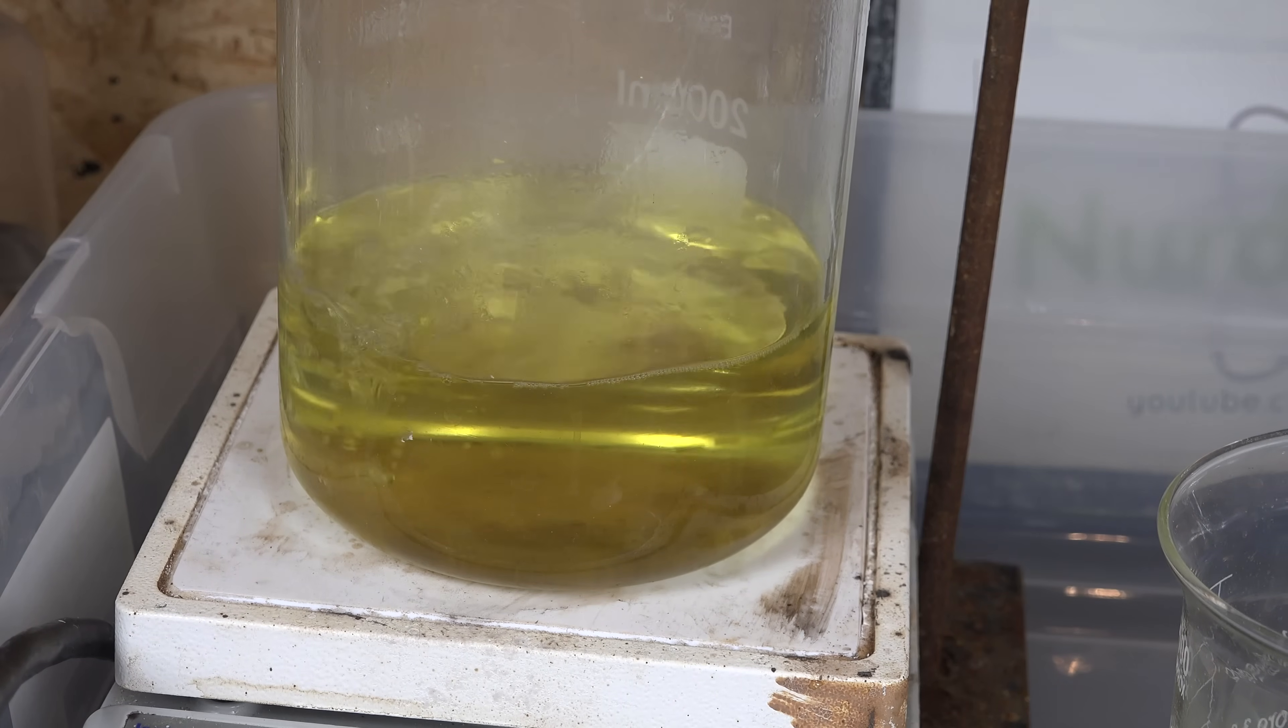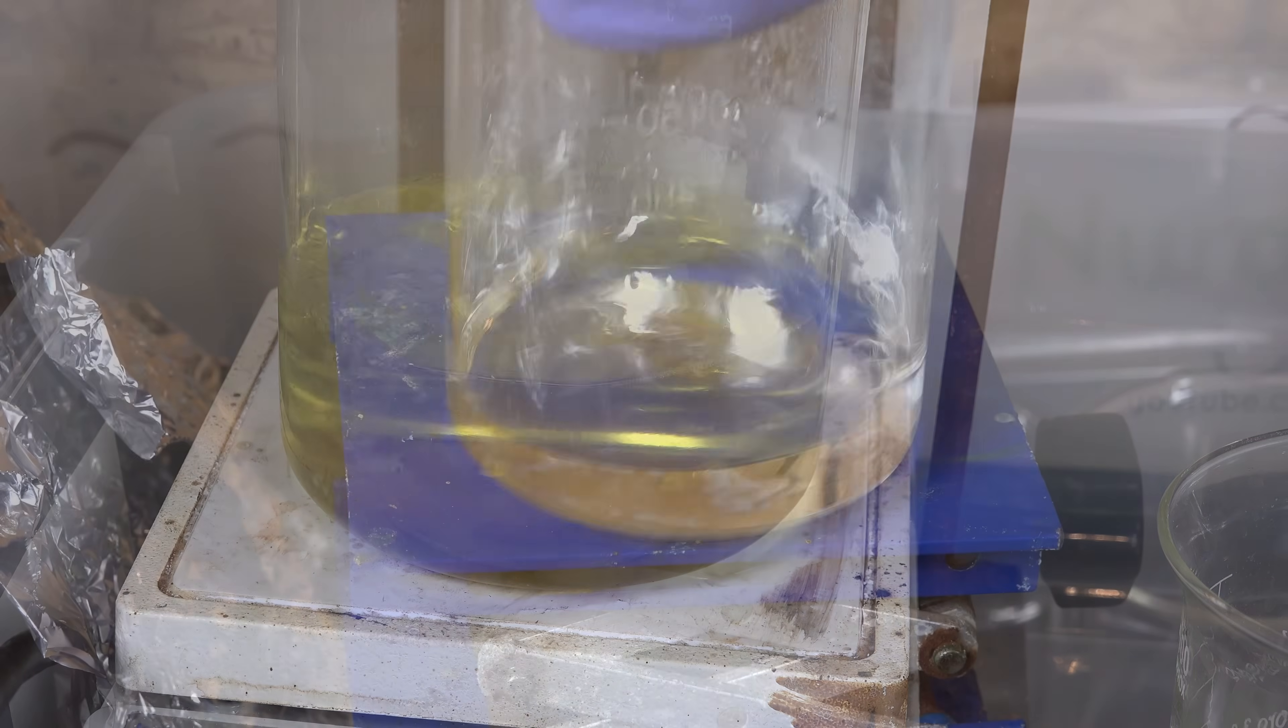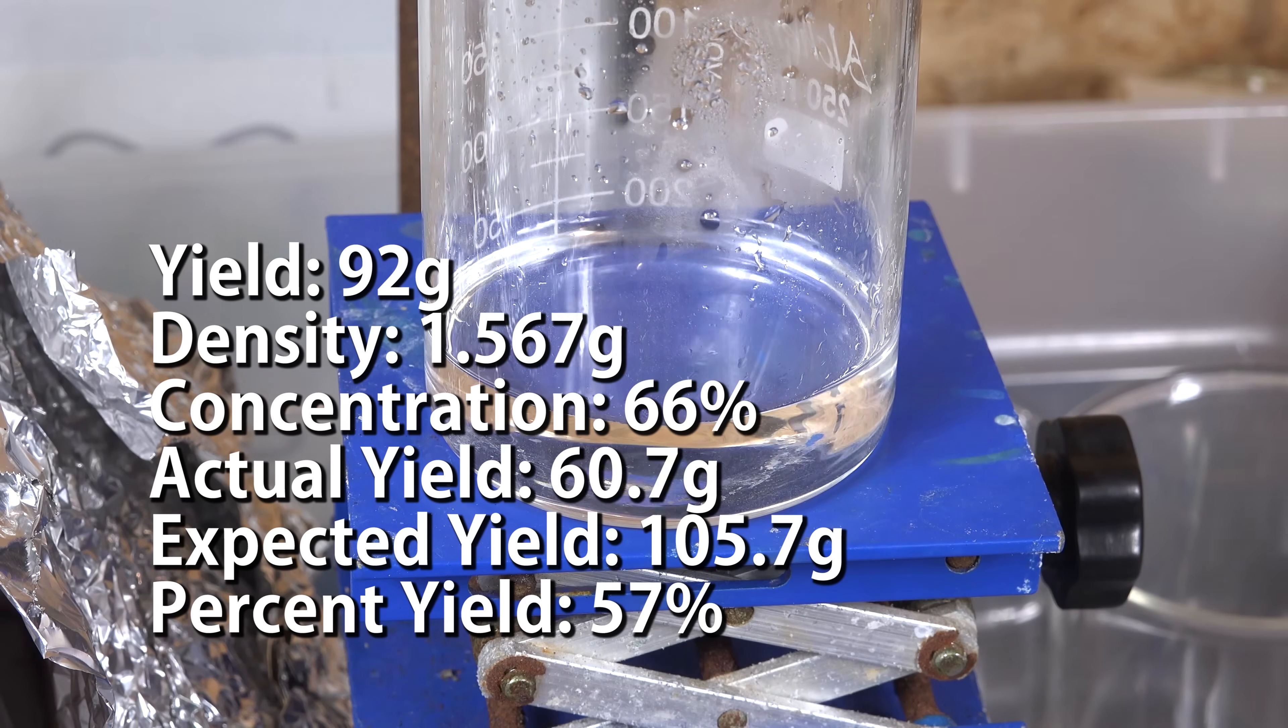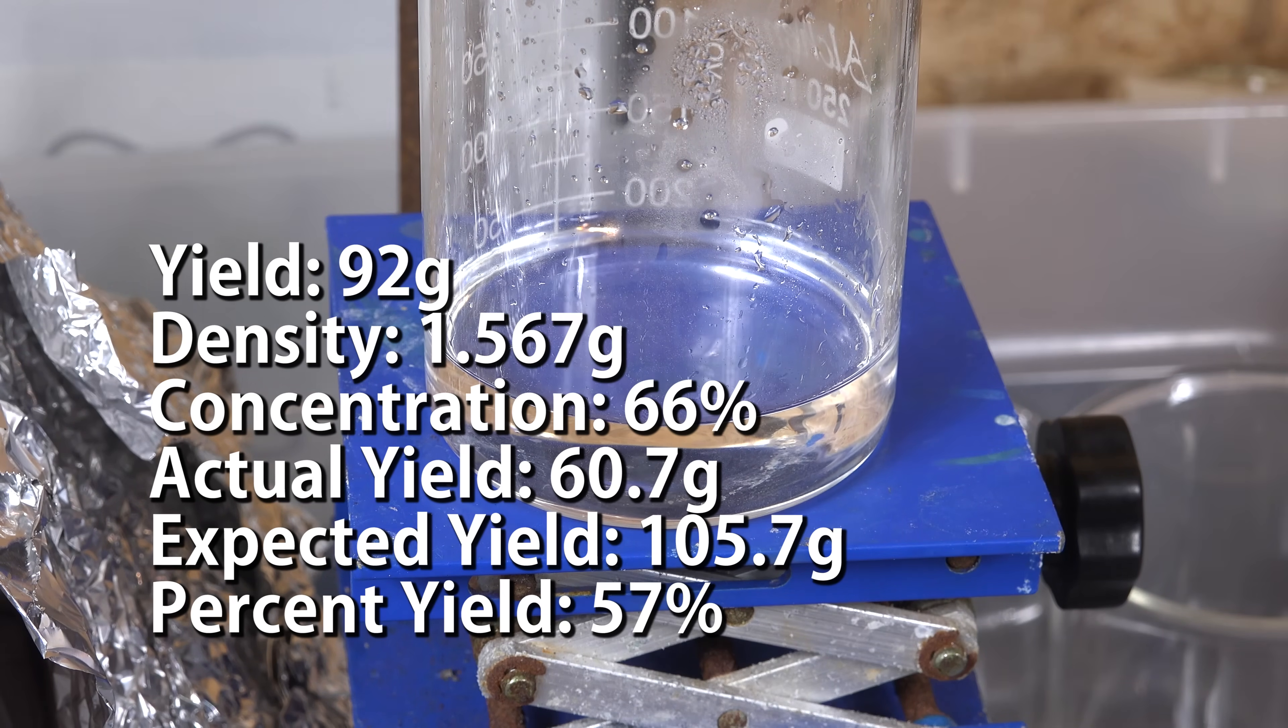And after doing the subsequent distilling and filtering, I was able to get about 57% yield of sulfuric acid with the displayed parameters. So this process can be optimized.